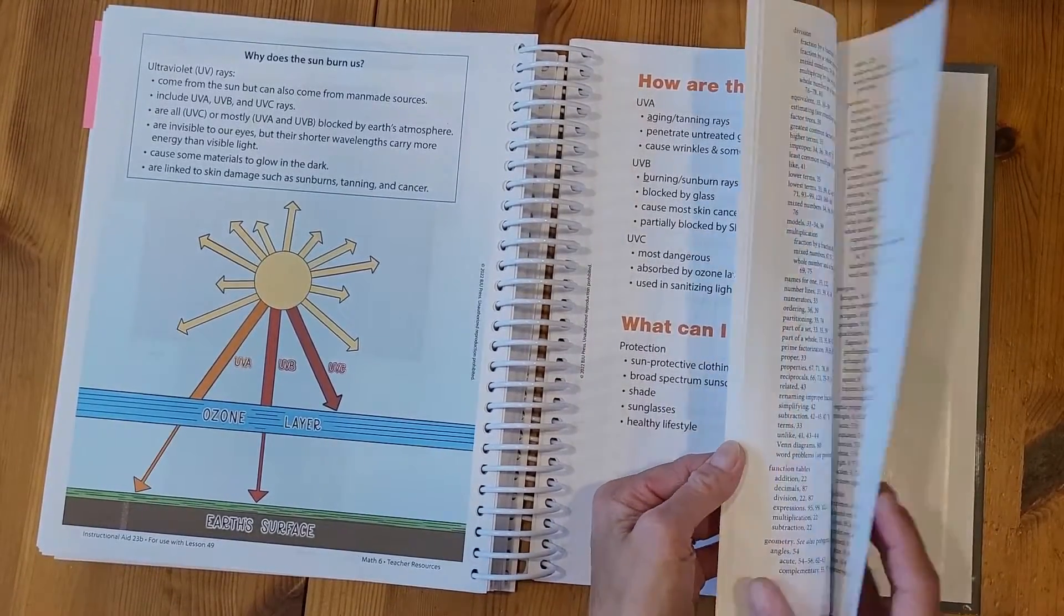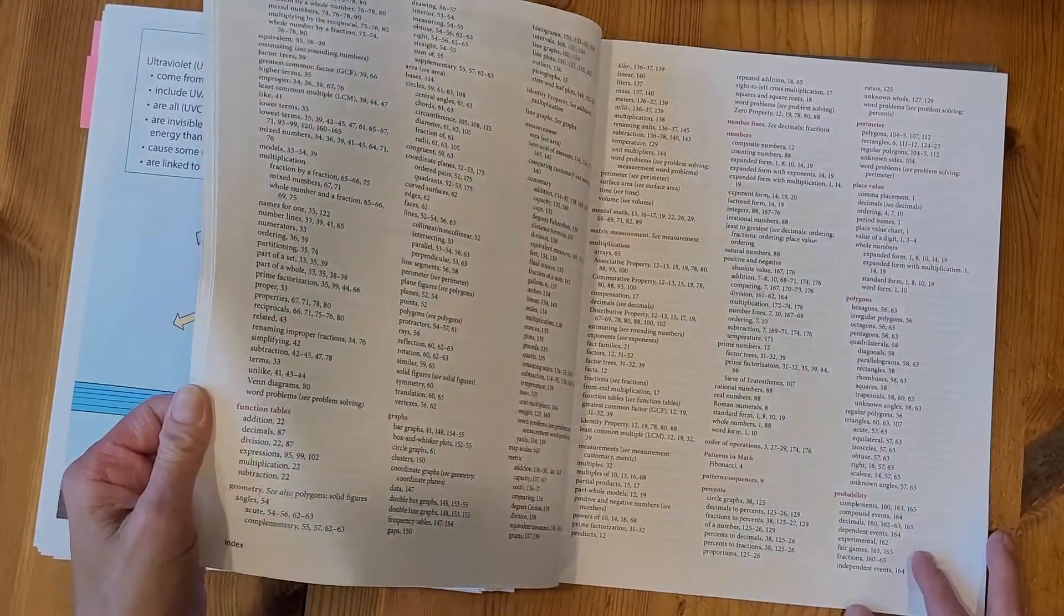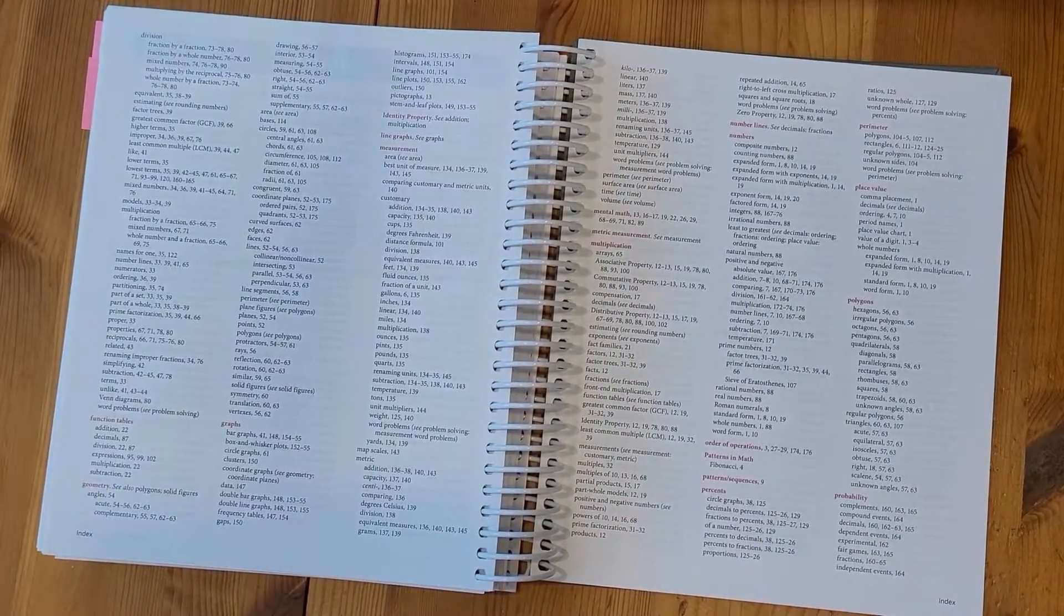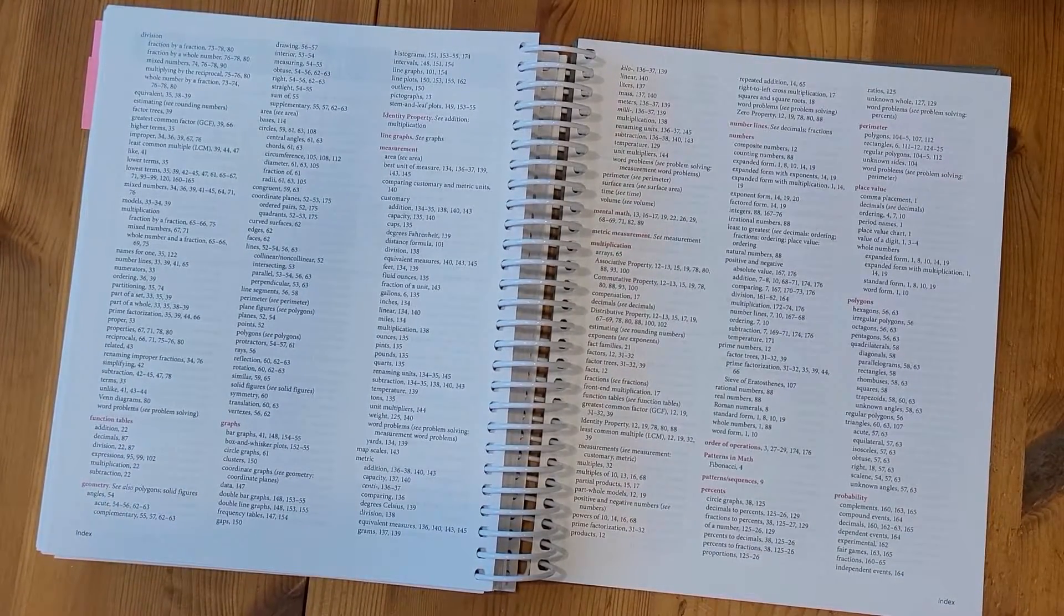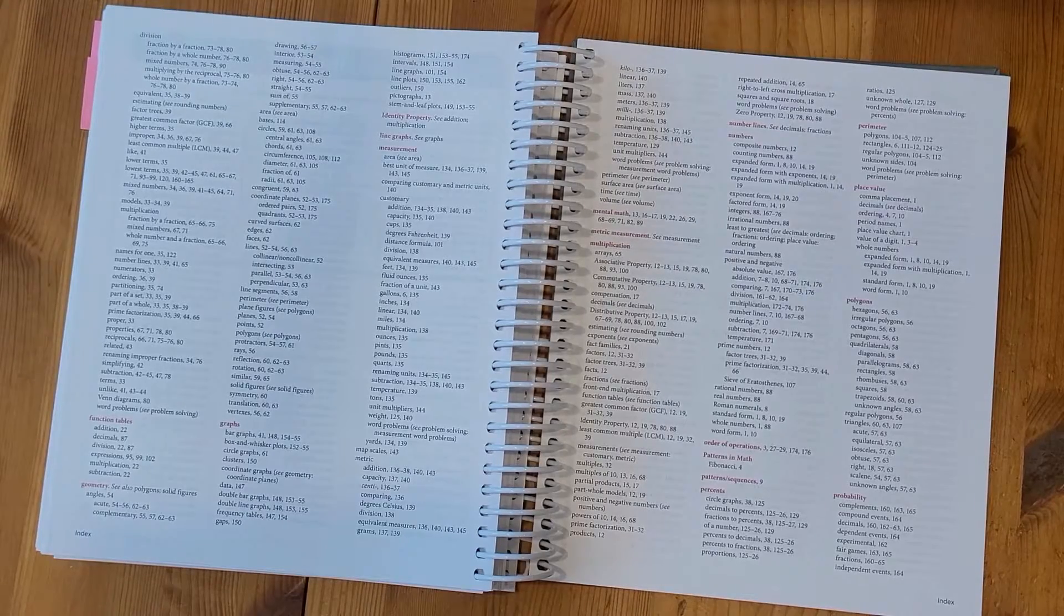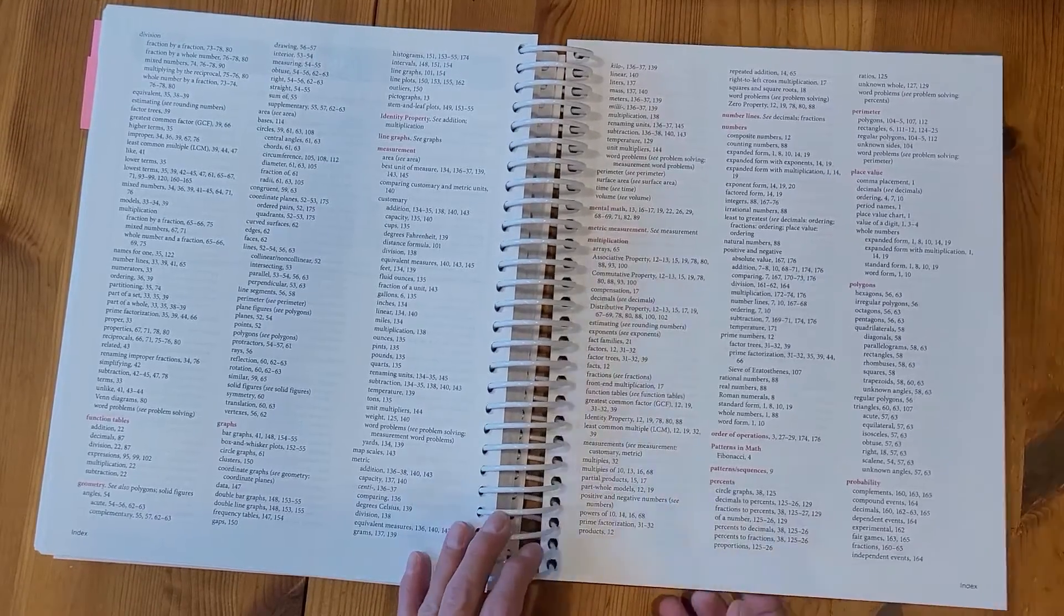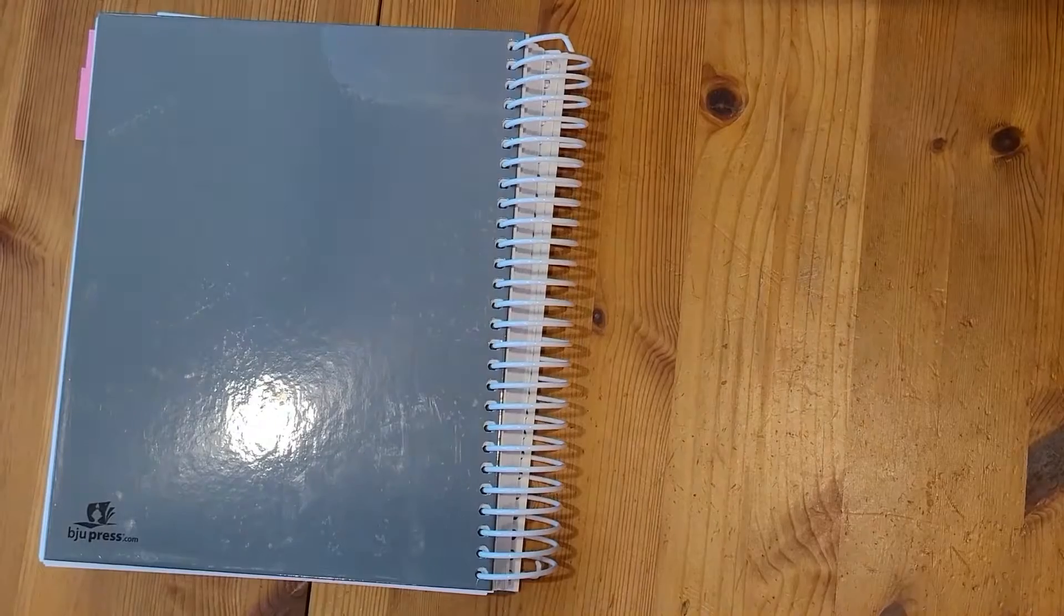All right, at the very back of the book, I also have an index. So if there was a topic that I needed to flip to quickly and I wasn't sure where in the book it would be, I do have the index to find those topics really quickly. So that is the Math 6 Teacher Edition.